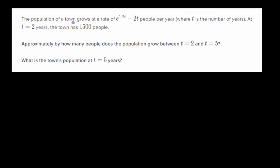We are told the population of a town grows at a rate of e to the 1.2t power minus 2t people per year, where t is the number of years. At t equals two years, the town has 1,500 people.